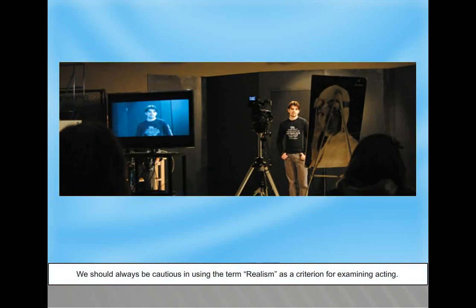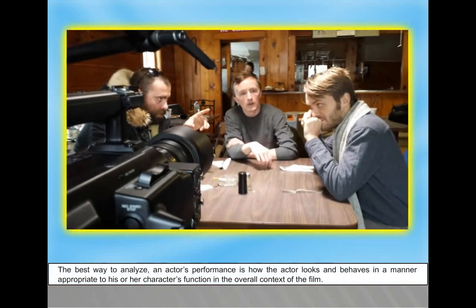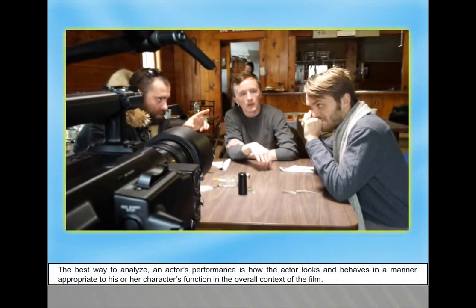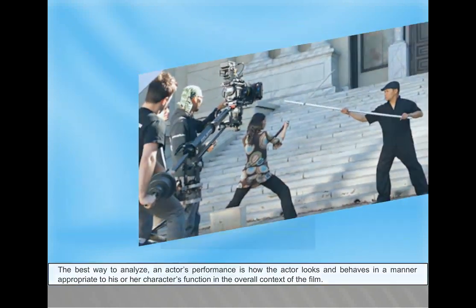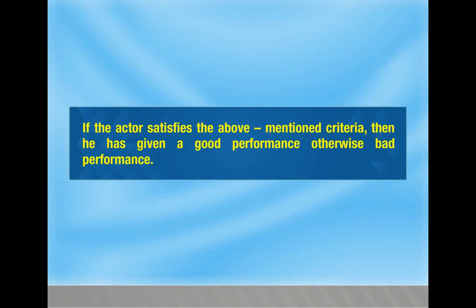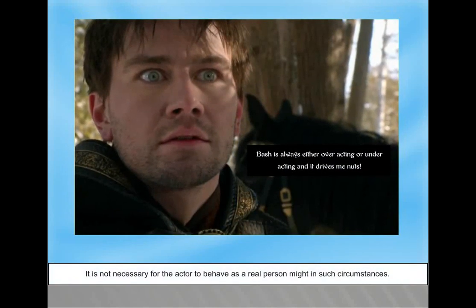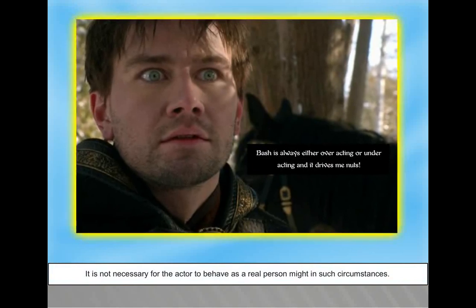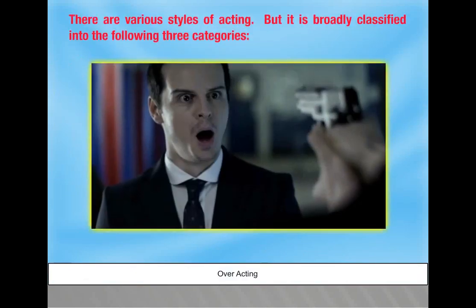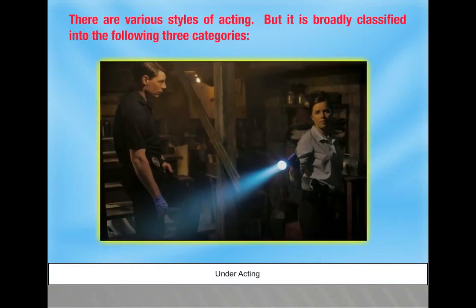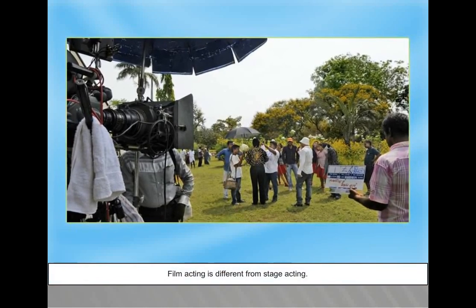We should always be cautious in using realism as a criterion for examining acting. The best way to analyze a performance is how the actor looks and behaves in a manner appropriate to their character's function in the overall context of the film. If the actor satisfies these criteria, then it is a good performance; otherwise it is a bad performance. It is not necessary for the actor to behave as a real person might. Acting is broadly classified into three categories: overacting, normal acting, and underacting. Film acting is different from stage acting.